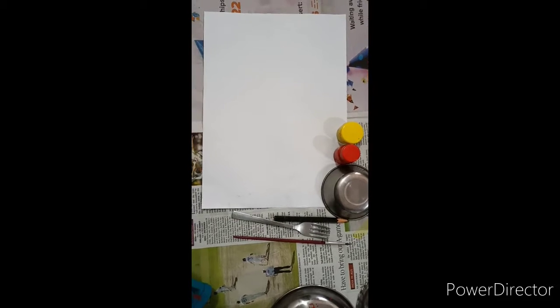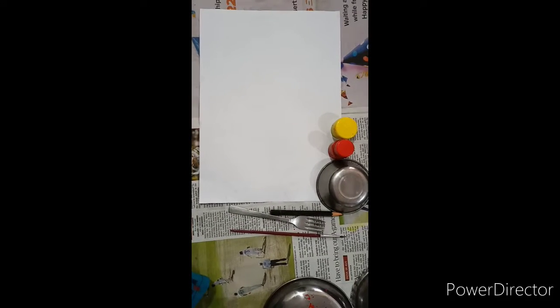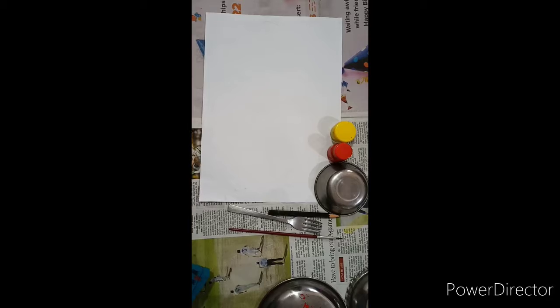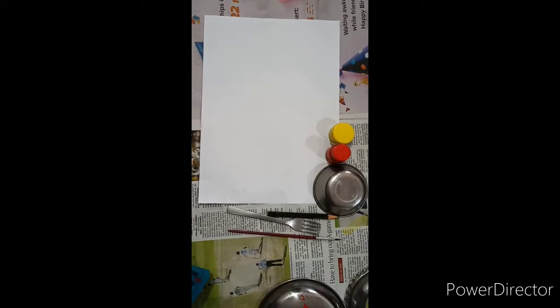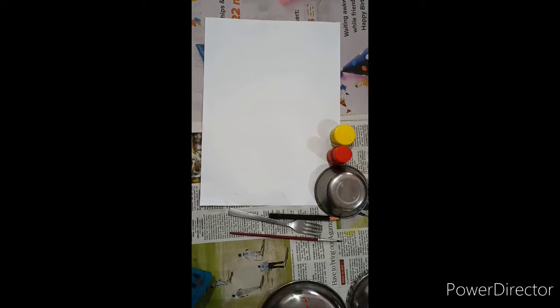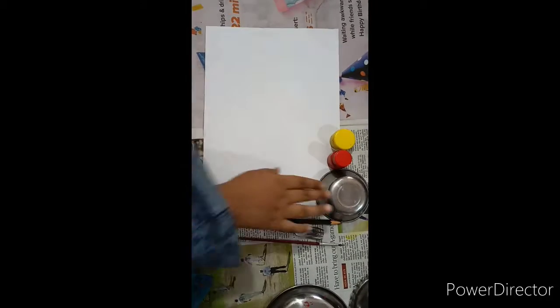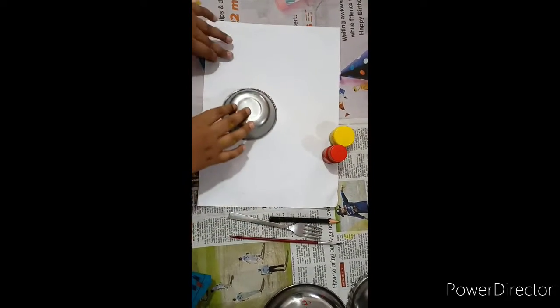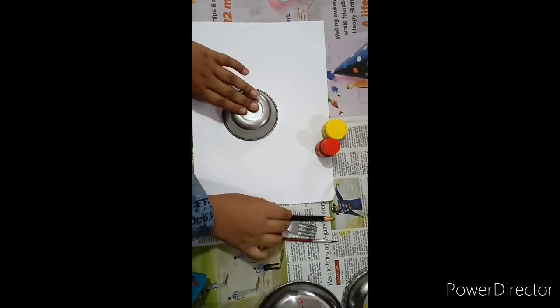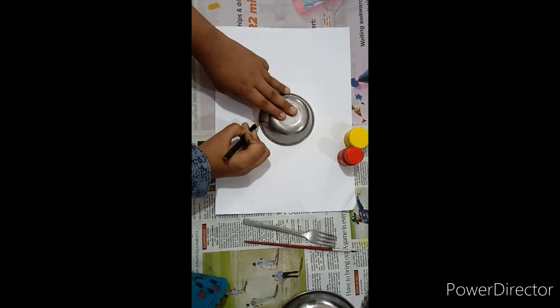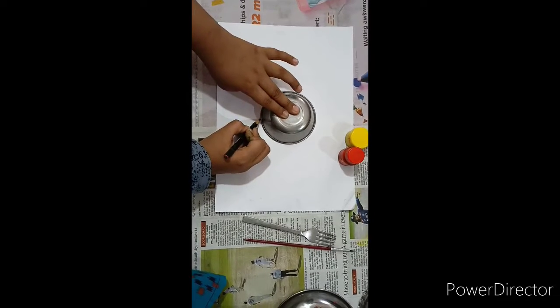Hello everyone, welcome to Start Expert. Today we are going to do lion painting using a fork. For this we need two colors, a circular object, pencil, paintbrush, and a fork. Now let's start. First, let's take the circular object and using the pencil, let's make a circle on the paper.